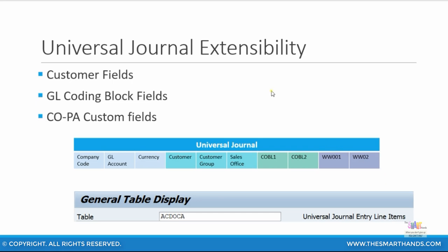Another advantage of the universal journal is its extensibility. Your custom fields, your GL coding block fields, and your COPA custom fields can all be added to the universal journal. For example, the custom fields you create for your COPA value fields and characteristics — which usually start with VV and WW — can also be added to the universal journal table along with your coding block fields for extensive reporting. These can all be displayed via your ACDOCT table.